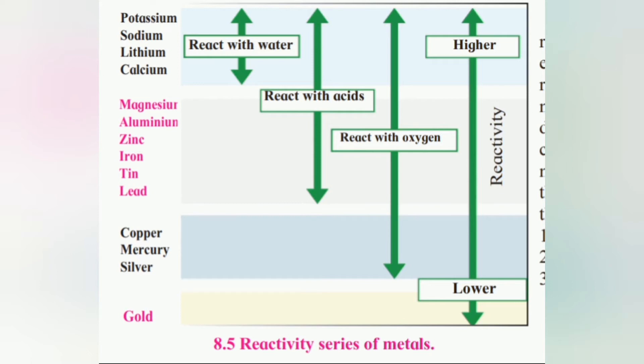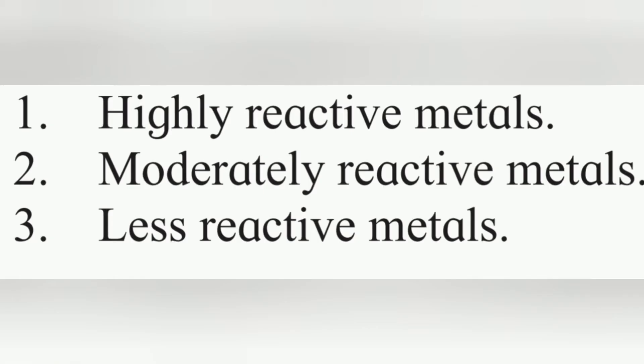Metals are divided into three groups according to the reactivity series. First group is known as highly reactive metals, second is moderately reactive metals, and third group is less reactive metals.